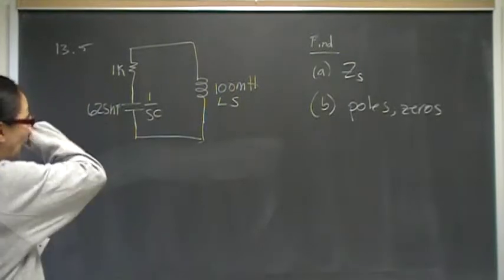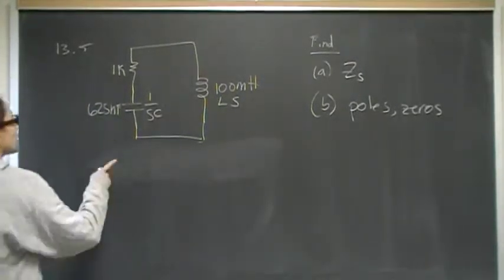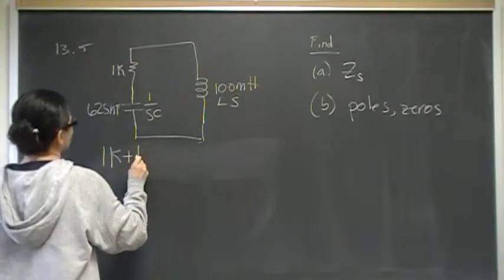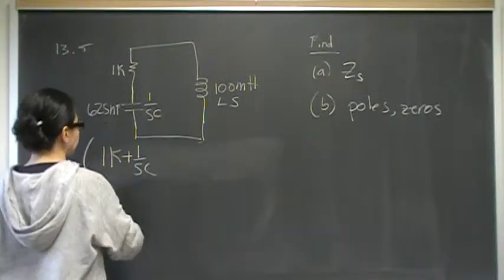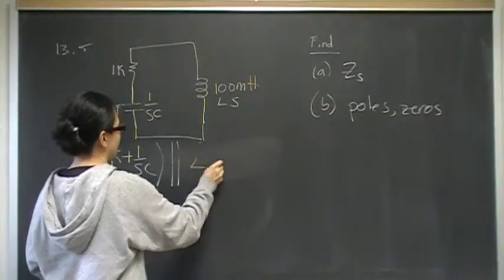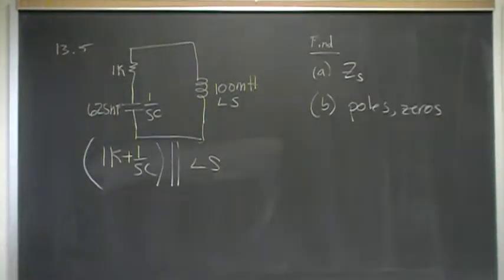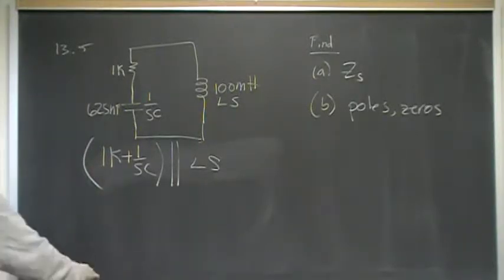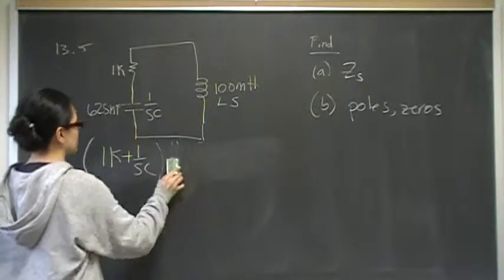Okay, part A. So, we have 1K plus 1 over Sc in parallel with Ls. Well, let's handle the series part first and come back to the parallel part. I'm going to come back to this in just a second.